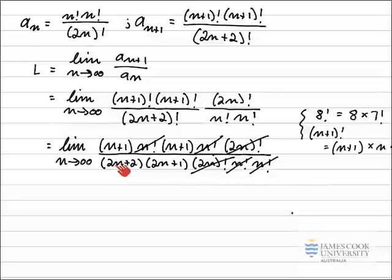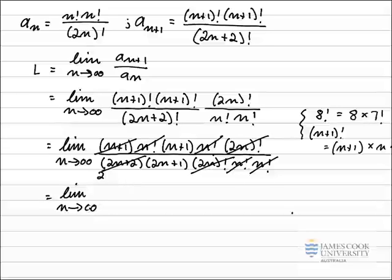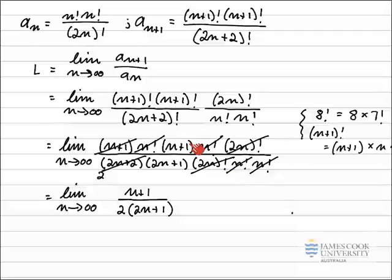Also, 2n plus 2 equals 2 times n plus 1, so the n plus 1 on the top can cancel with part of 2n plus 2 on the bottom, leaving a factor of 2. Simplifying all of that and writing the limit again as n approaches infinity, on the top line all we have is n plus 1, and on the bottom line all we have is 2 multiplied by 2n plus 1. No factorials remain.